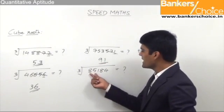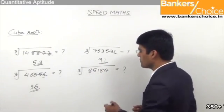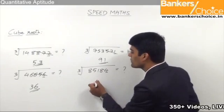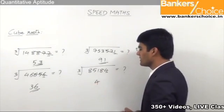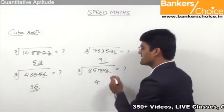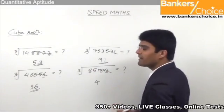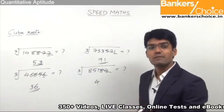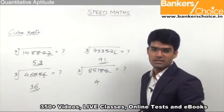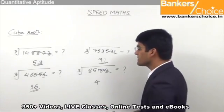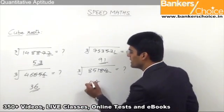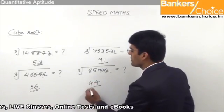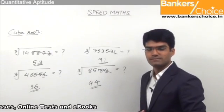The last number is 85184. When a number ends with 4, the cube root ends with 4. Leaving the last three digits, less than 85 and a perfect cube is 64, which is 4 cubed. So the tens place is 4, and 44 is the answer for the last one.